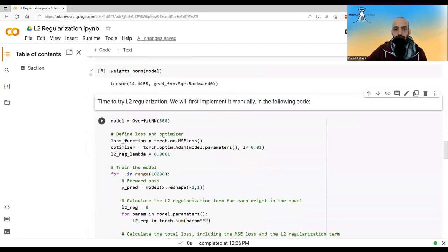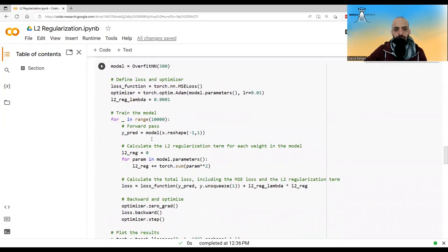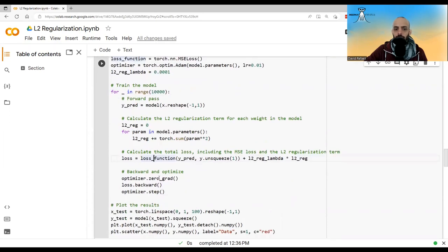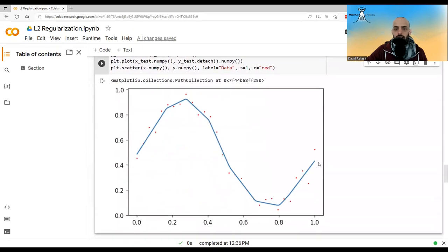Now I will add L2 regularization. This is the manual way of doing this. It's the same function as before. I've just added this thing over here, which calculates the L2 norm per parameter. It iterates all the model parameters and adds it to this variable L2_reg. Then I'm adding the L2_reg times the hyperparameter lambda, which I've set here to the loss. Then I'm doing back propagation. And this is the result,